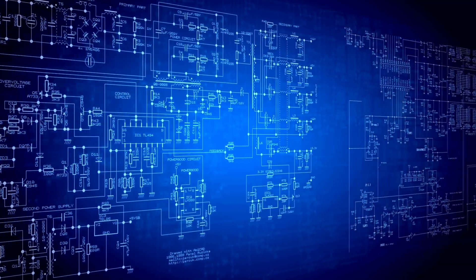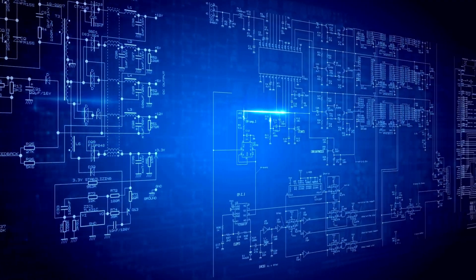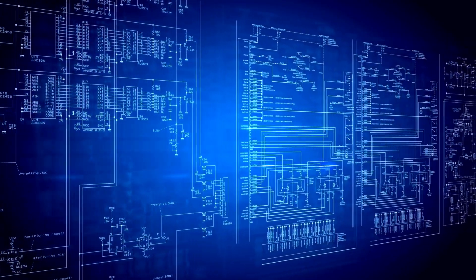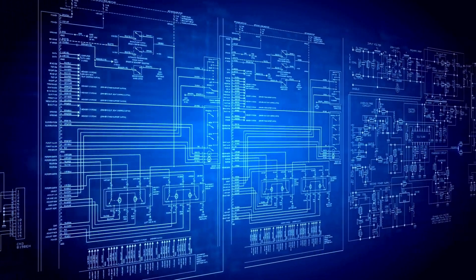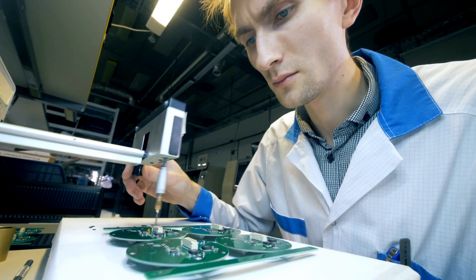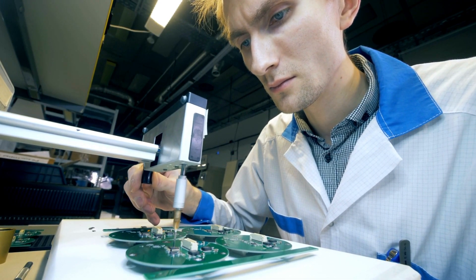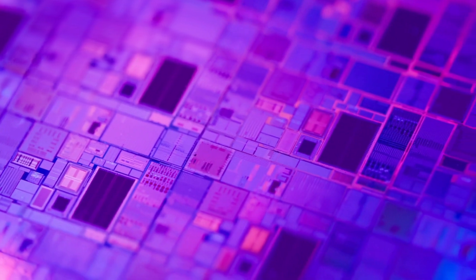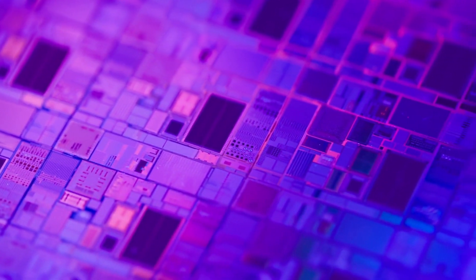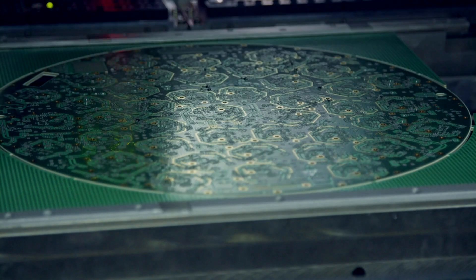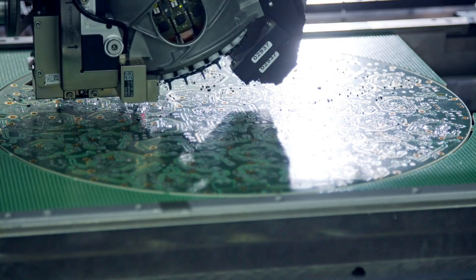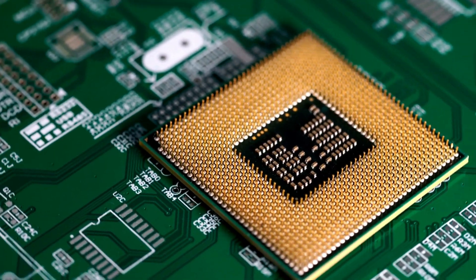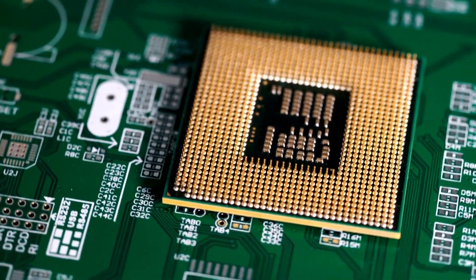IC design and fabrication. The design process involves creating a schematic that outlines the arrangement and connections of the components, specifying the placement of the transistors, resistors, capacitors, and interconnects. The fabrication process involves creating a physical IC based on the design. It begins with the creation of a wafer from the semiconductor material, commonly silicon. Layers of materials and patterns are added through lithography, etching, and deposition. The final step involves packaging the IC for protection and easy integration into electronic devices.